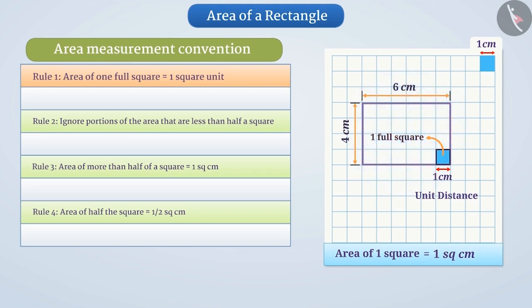In the given rectangle, we observe that the total number of full squares is 24. Since the area of one full square is 1 cm², we can say that the area enclosed by full squares is 24 multiplied by 1 cm² equals 24 cm².